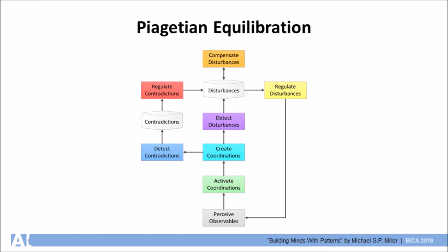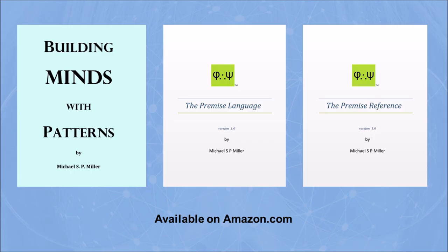Piaget even had a specific plan for how this change occurred, which he called equilibration. Essentially, equilibration is the process by which the mind adjusts itself to the world. Equilibrium being the point where no more adjustments or internal modifications need to be made.